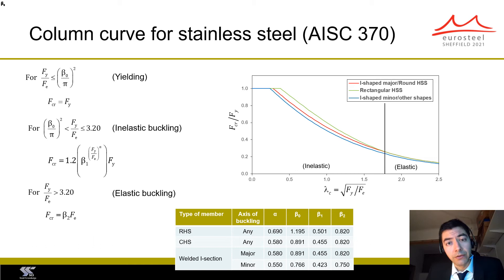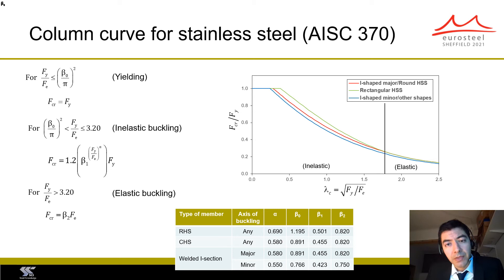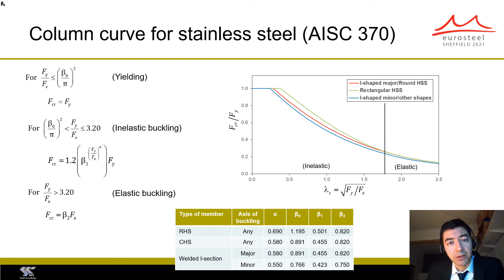For example, the reduction coefficient used in the definition of elastic global buckling is lower for stainless steel buckling curves than for the carbon steel buckling curve. Also, the transition between elastic and inelastic buckling occurs at a higher column slenderness for stainless steel columns. Another important difference is that the stainless steel buckling curves include a yield plateau. This recognizes that at short column slenderness, stainless steel columns show higher resistance than equivalent carbon steel columns due to the beneficial effect of strain hardening. Having a yield plateau also allows compatibility with the continuous strength method, which is also included in AISC 370 as an alternative design method.